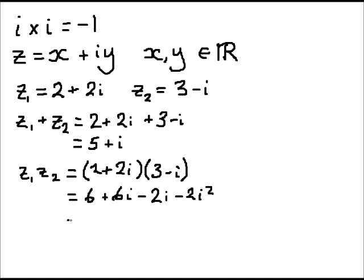And then simplifying that, 6 plus 6i minus 2i is plus 4i minus 2i squared. Well, i squared is negative 1, so that's minus 2 times minus 1 is plus 2. So, my complex number is 8 plus 4i.